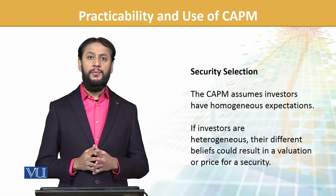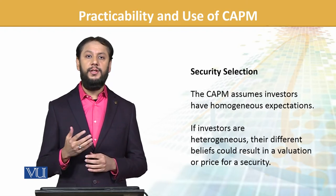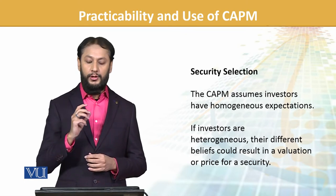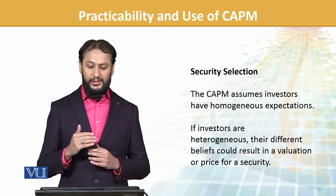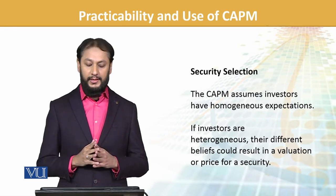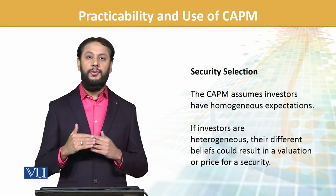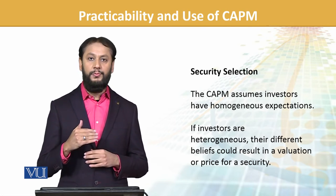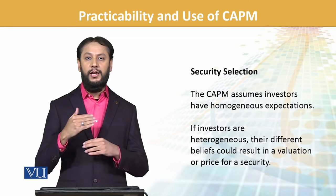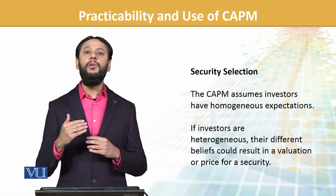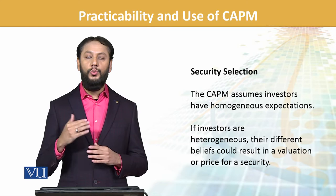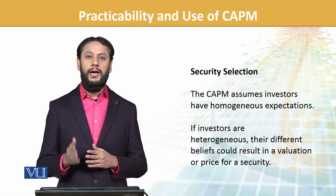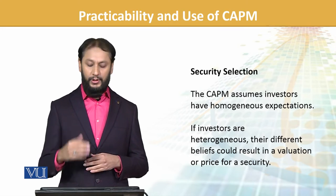A more important part is security selection — selecting, cherry-picking the good stocks. CAPM assumes investors have homogeneous expectations, which was a simplifying assumption. But if investors have heterogeneous, different beliefs, that results in different valuations of a security. If valuations differ, investors will arrive at their own valuations, which can be compared with the market and used for security selection.